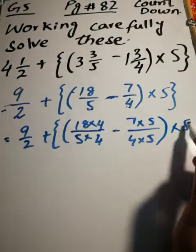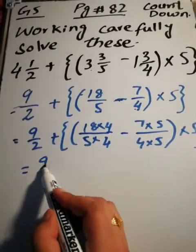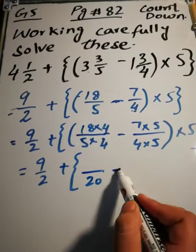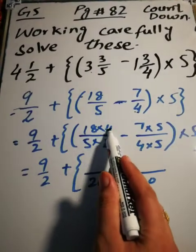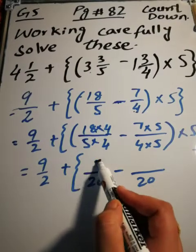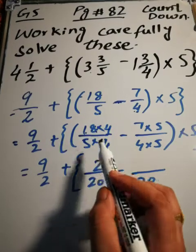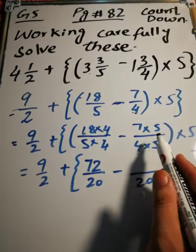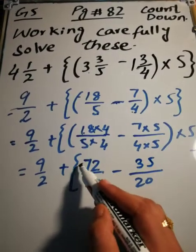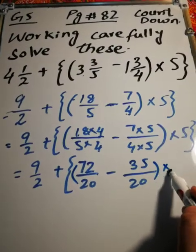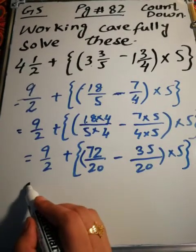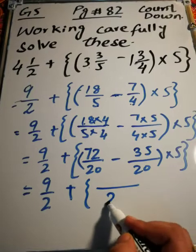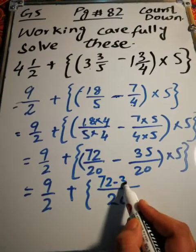Then 9/2 plus, 5 times 4 is 20, 5 times 4 is 20, 4 times 8 is 32, 2 times 3, carry, 4 times 1 is 4 plus 3 is 7. So 18 times 4 is 72 minus 7 times 5, 5 times 5 is 35, bracket, bracket, multiply 5.